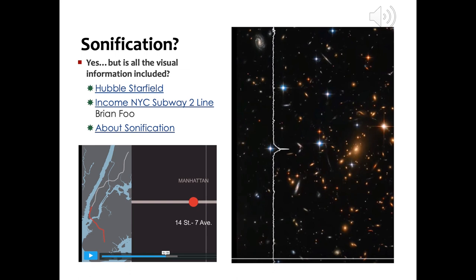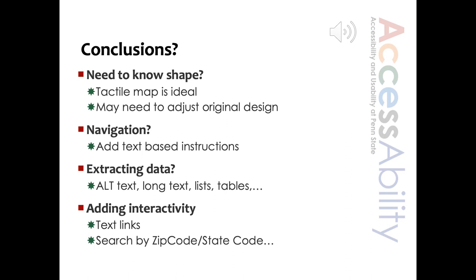So here's a summary of some potential guidelines. If you know you need to convey shape, you might want to consider a tactile map, but you may need to adjust the original design to make it usable by someone using only touch. If the map is for navigation, you could add text-based instructions, which actually benefits sighted users who prefer text-based instructions over using a map. If you're trying to extract data, usually alt text, long alt text, or a list or table are good strategies. If you're adding interactivity with a clickable map, you might also want to think about making sure you have text links or the ability to search by zip code. Thank you for viewing this — I hope some of this is helpful for your projects.